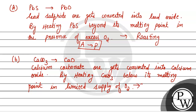Calcium carbonate ore gets converted into calcium oxide by heating calcium carbonate below its melting point in limited supply of oxygen. तो इसमें जो हमारा carbonate ore है, वो oxide में convert होता है oxygen की limited supply में. इस process को हम बोलते हैं calcination. तो जो हमारा B part है, वो Q से match हो रहा है.